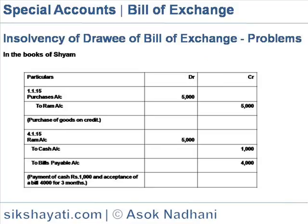On the other hand, in the books of Sam, the entries would be: on 1st January, Purchases account debit Rs. 5,000 to Ram account Rs. 5,000. On 4th January, Ram account Rs. 5,000 to Cash Rs. 1,000 and Bills Payable Rs. 4,000 — Rs. 1,000 paid in cash and the bill accepted for Rs. 4,000 for 3 months.